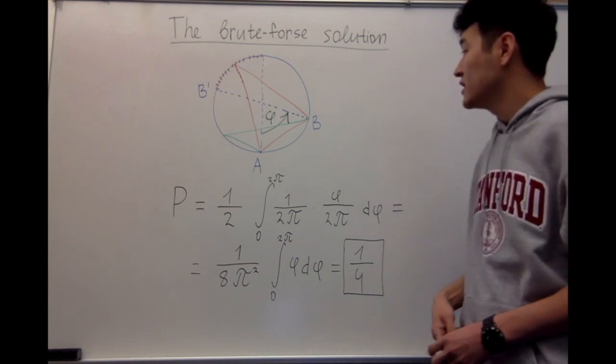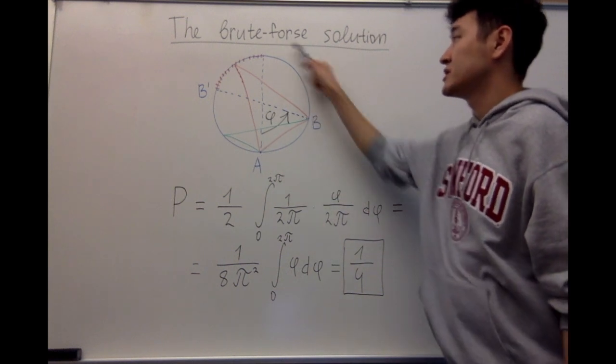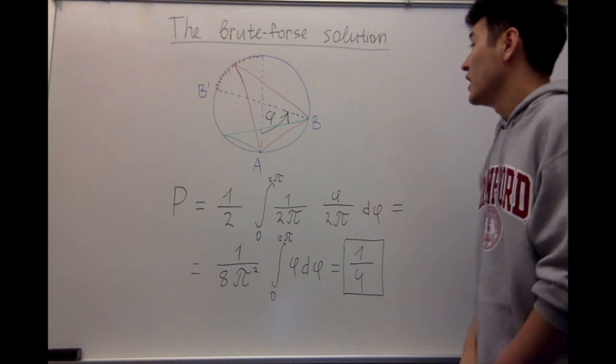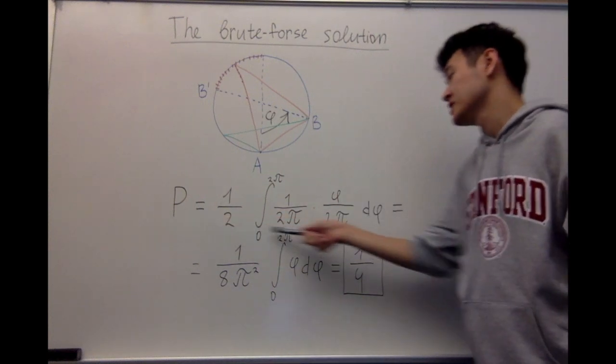Let's fix point A and move point B around the circle and integrate over all the possibilities. Then we can obtain the following expression.